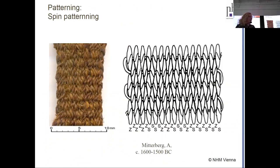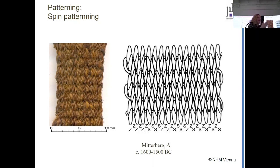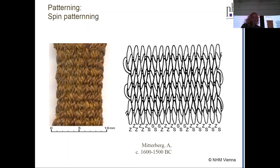What we also have is a thing called spin pattern. You can twist a thread in two directions — Z or S direction — which is how you spin, how you turn your spindle. If you use threads in groups, you can make very interesting structures, even stripes or checks or whatever. It's just how light is reflected by threads twisted in one direction or the other. This is something that also appears in the mid-second millennium BC and is really common in the Hallstatt period.